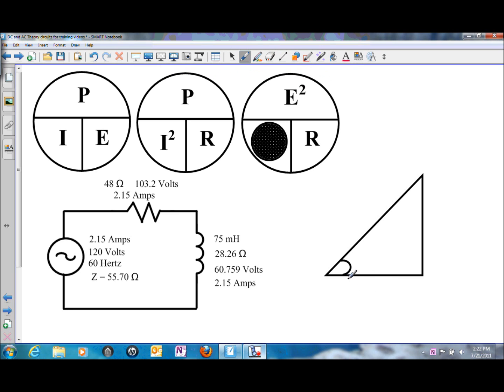So the resistive side, if we want to find true power, we will just use I times E. What I did is I used I times E for all of them, just as long as we are using the correct values. So for the resistive side, it will be 2.15 amps of current flow times 103.2 volts of resistive voltage. That will give us 221.88 watts.